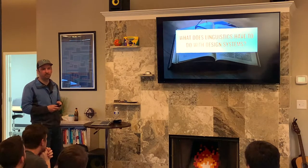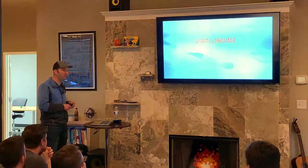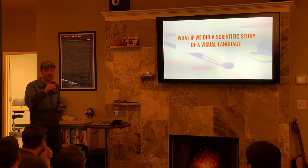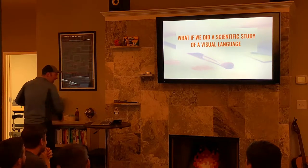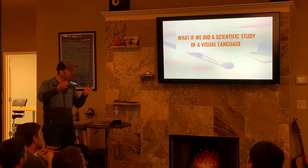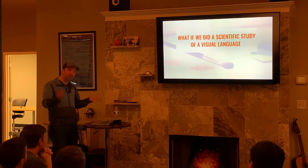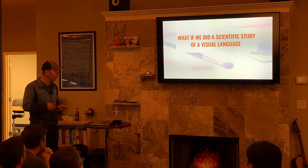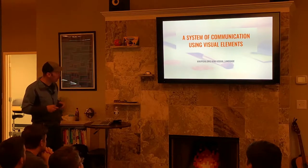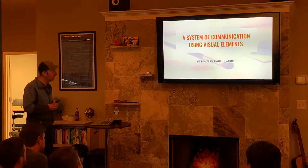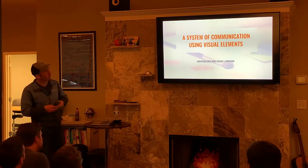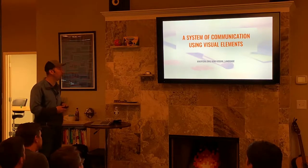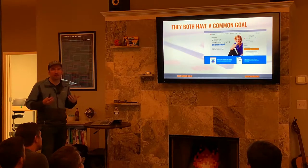So what does this have to do with design systems? Well, absolutely nothing. But what this does have a lot to do with is visual language. What I want to ask is: what would happen if we did a scientific study of a visual language? You might say a visual language and a spoken language are two completely different things — why would you ever study a visual language the way you study a spoken language? Visual language is a system of communication using visual elements. If you change that second part to 'spoken words,' it's the exact same thing. One just happens to be visual, one happens to be spoken — they both share this common goal of communication.